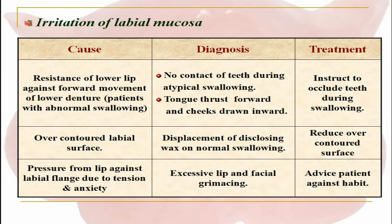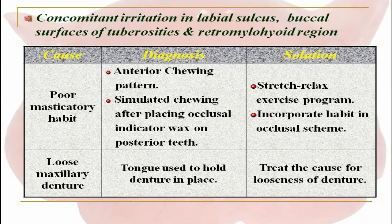Irritation of the labial mucosa: the cause could be resistance of the lower lip against forward movement of the lower denture in patients with abnormal swallowing. Diagnosis is no contact of teeth during atypical swallowing, with tongue thrust forward and cheek drawn inward; treatment is to instruct the patient to occlude teeth during swallowing. The next cause could be an over-contoured labial surface; diagnosis is displacement of disclosing wax on normal swallowing; treatment is to reduce the over-contoured surface. Another cause is pressure from the lip against the labial flange due to tension and anxiety; treatment is to advise patient against the habit.